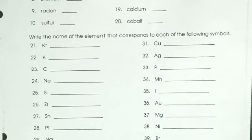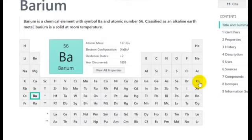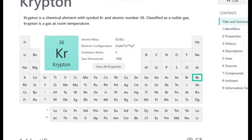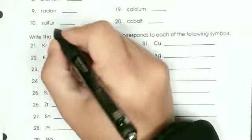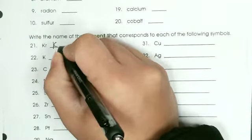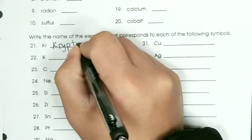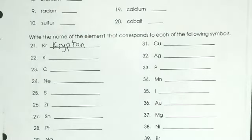All right, time for the second half. This time the worksheet asks you to find a name given the element symbol. Twenty-one is Kr, and that's on the right hand side of the periodic table. Kr is the symbol for the element krypton, sounds like Superman's weakness, which is kryptonite.